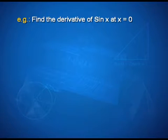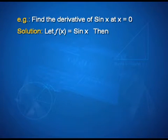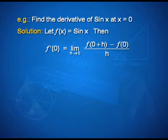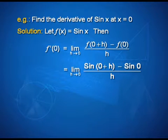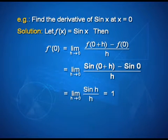Here is an important remark. At this stage, please note that evaluating the derivative at a point involves effective use of various rules that limits are subjected to. The following example illustrates this. Find the derivative of sin x at x=0. Let f(x) = sin x. Then f'(0) = limit of f(0+h) minus f(0) upon h as h tends to 0, which can be written as limit of sin(0+h) minus sin(0) upon h as h tends to 0, simplified as limit of sin h upon h as h tends to 0, which equals 1.